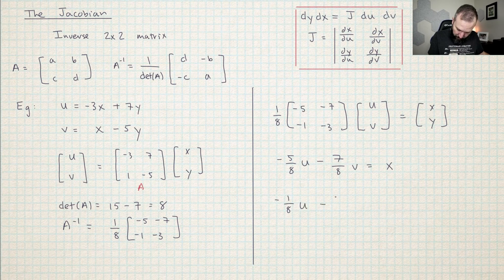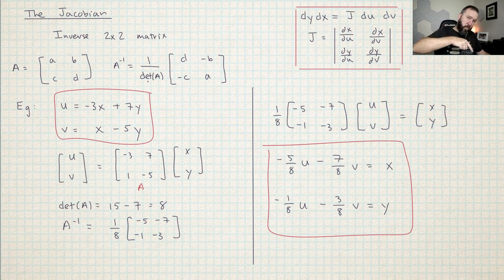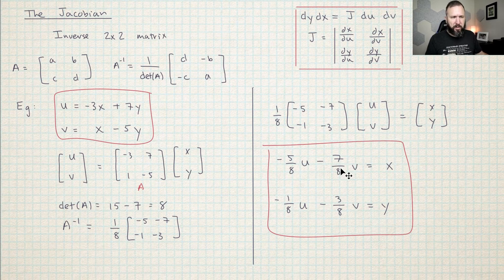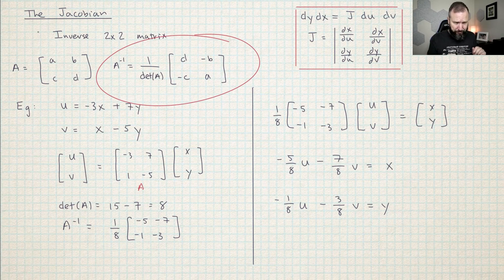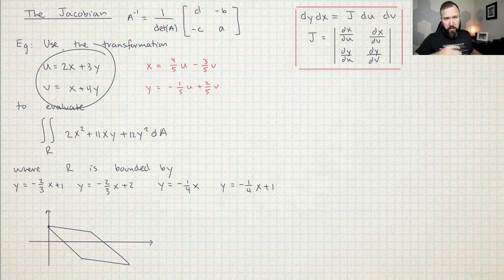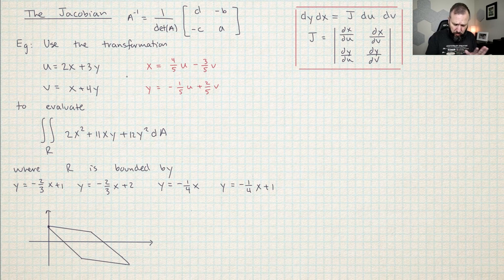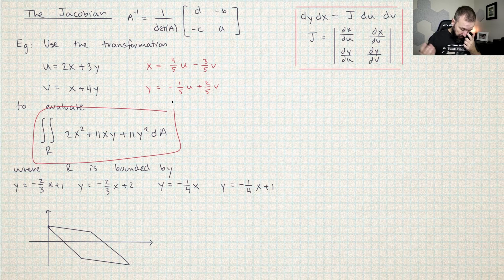You can see I've just moved A to the other side and made it A inverse — multiplied both sides by A inverse. If we pull out the top and bottom equations, this means that negative 5 over 8u minus 7 over 8v equals x, and negative 1 over 8u minus 3 over 8v equals y. We started with an equation that takes xy and gives you uv, and using this formula I ended up with an equation that takes uv input and spits out xy. This is really useful — get used to this formula, it'll save you a lot of time.